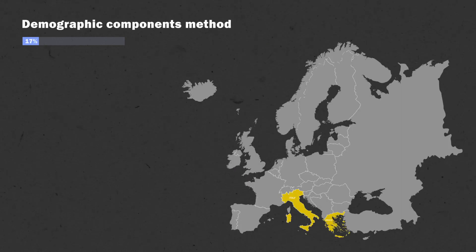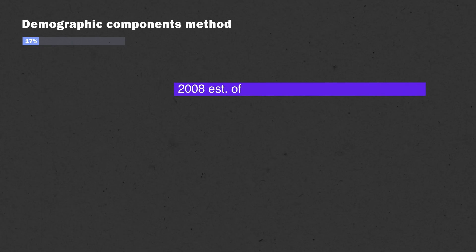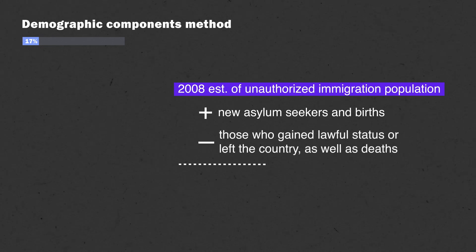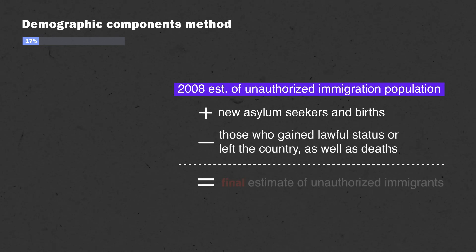When data within a country doesn't allow for a residual method, a demographic components method is a good backup. This was the case for Italy and Greece, where we took 2008 estimates of the unauthorized immigrant population, then added new asylum seekers — like those from the recent surge — and births. Then we subtracted those who gained authorization, deaths, and those who may have left the country.